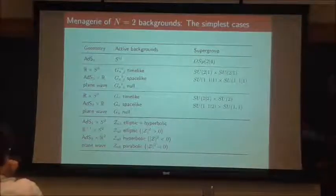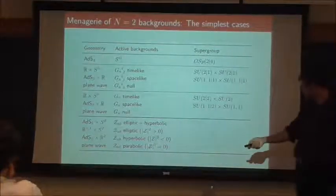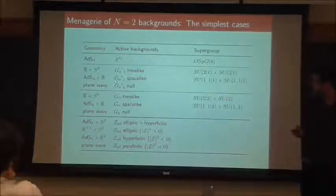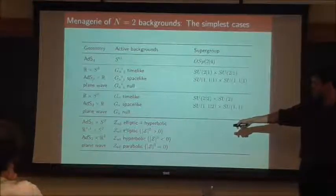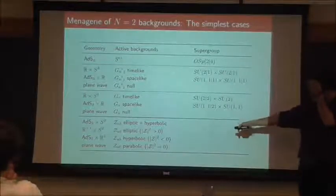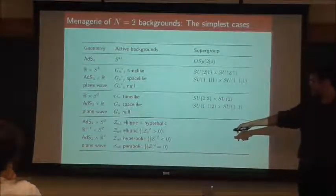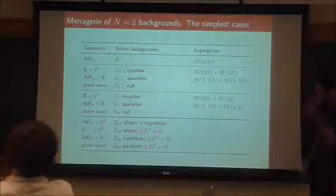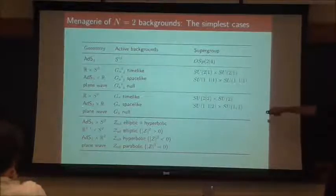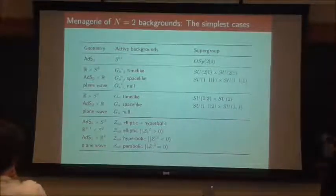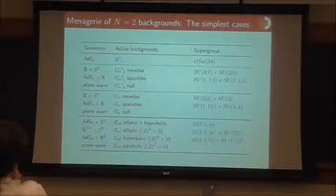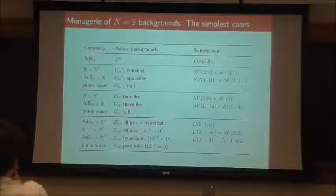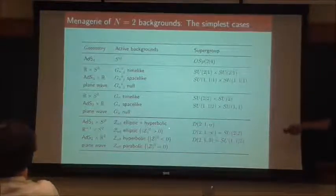The other option of the simplest cases is AdS₂×S² — that corresponds to having the complex two-form Z_{AB} turned on. Basically, the options are: in the elliptic case, it has one piece which is purely spatial (mod-squared is positive); in the hyperbolic case, it has a leg in a time direction (mod-squared is negative); there's a plane-wave case; and the most general case has two pieces giving support for both the AdS₂ and the S². The supergroup in the general case turns out to be D(2,1;α), which has some fun properties, and the degenerate cases are limits of that.